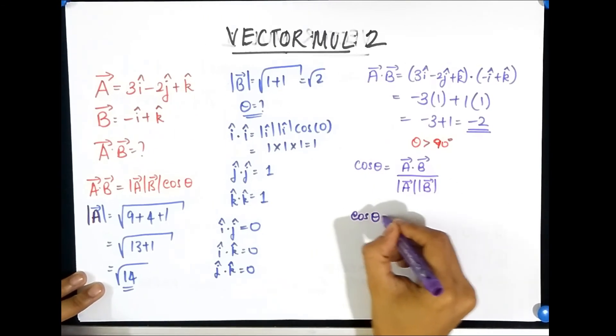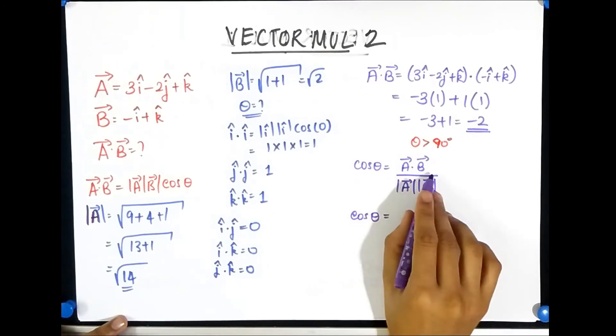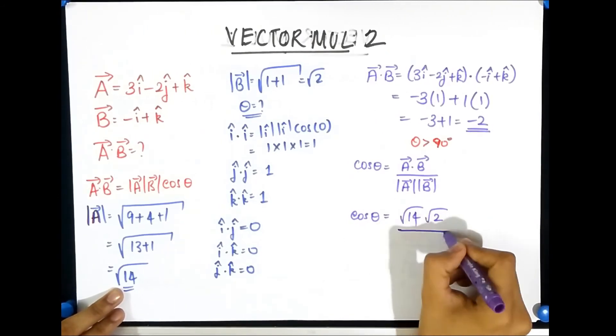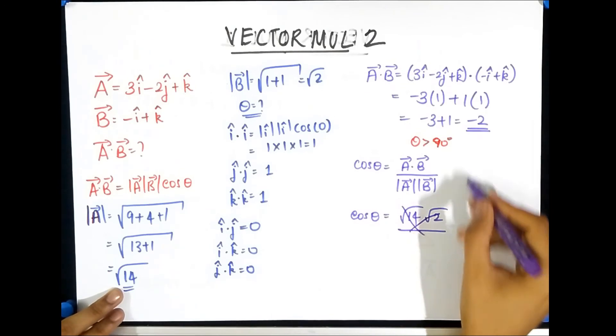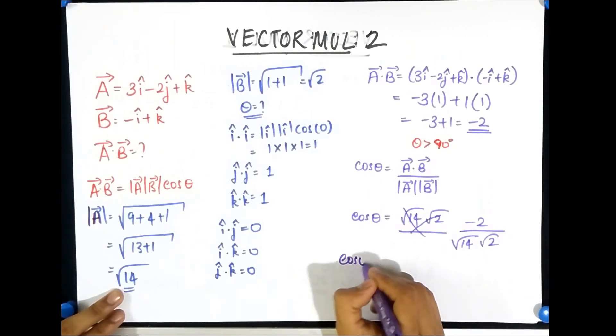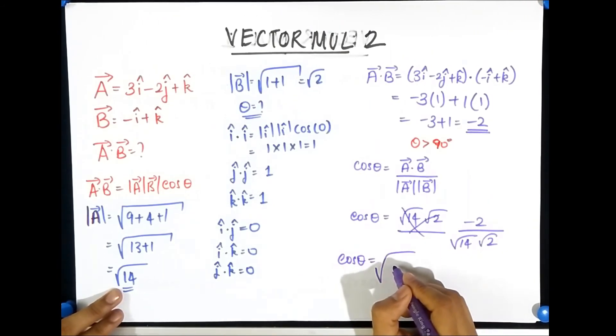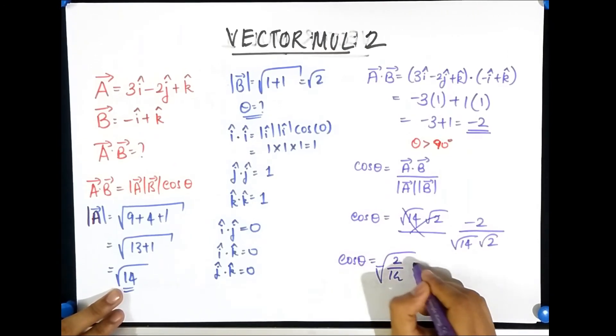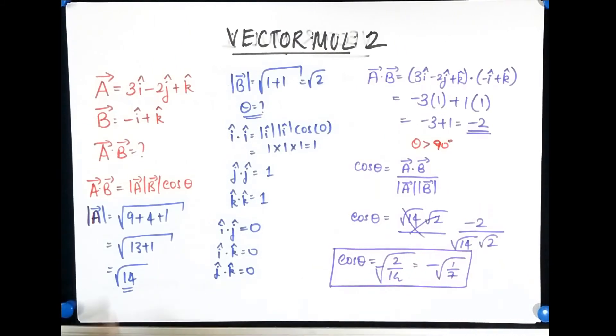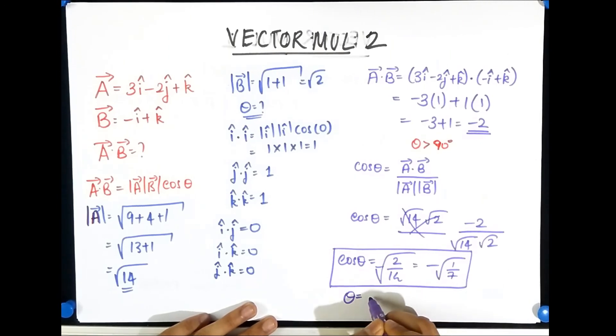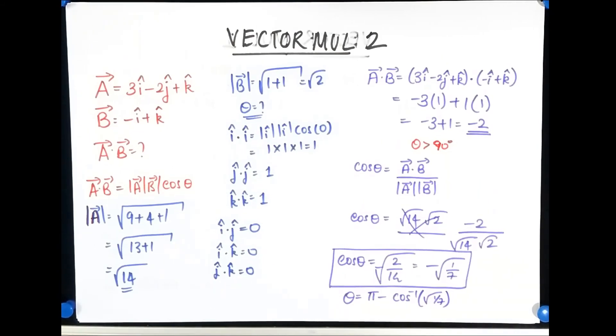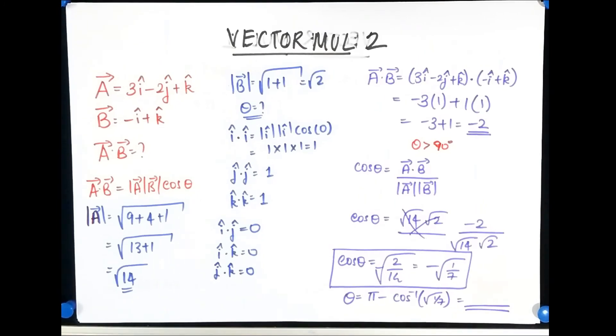So we will do cos theta is a dot b divided by magnitude of a times magnitude of b. So cos theta becomes, let's see, we have magnitude of a as square root of 14, we have magnitude of b as square root of 2. Oh sorry, on the numerator we have this minus 2 and divided by we have square root of 14 into square root of 2. So if we simplify, you get cos theta equals negative of 1 by square root of 7. So theta ends up becoming, if you know a little bit of trigonometry, is pi minus cos inverse of 1 by square root of 7, and you'll get some answer over here.